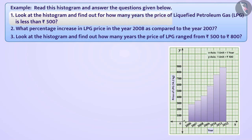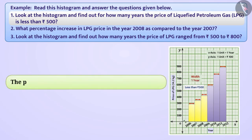Look at the histogram and find out for how many years the price of LPG is less than 500 rupees. We see that the price of LPG is less than 500 rupees in the year intervals 2006 to 2007, 2007 to 2008, and 2008 to 2009. Since the width of each class is one year, the price of LPG has been less than 500 rupees for three years.